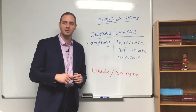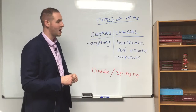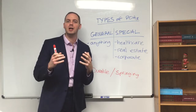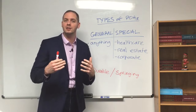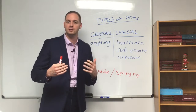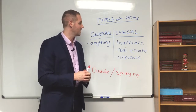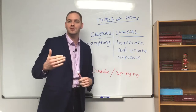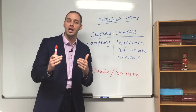Hey everyone, Zach DiLerno here with Sunrise Law Group, and today we're here to talk about certain types of power of attorneys. A power of attorney, the general concept, is a legal document that grants an individual authority to act or make legal transactions on behalf of another person. In the most basic context, if you had a power of attorney over your mother, you would have the ability to make decisions or sign documents on her behalf — you are her agent.